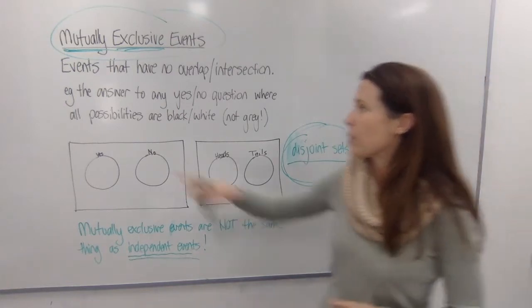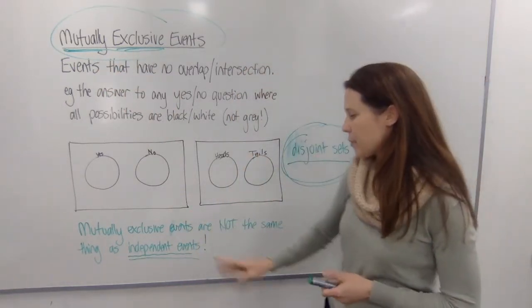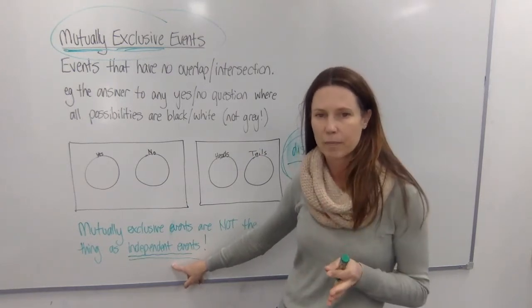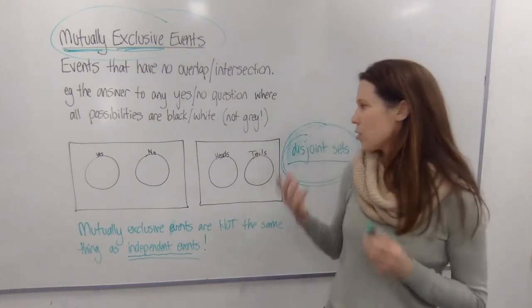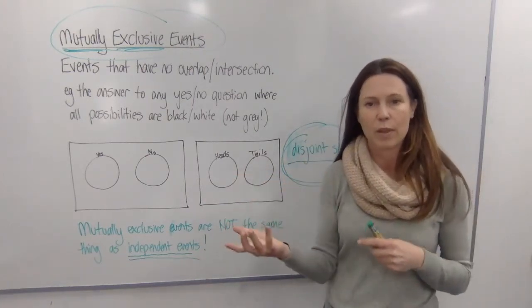Now one of the only things that can get confusing when you see these words in a math question is that people often mistake them as being the same thing as independent events and they're not the same thing. Mutually exclusive events are events where you really can't get both, you have to have one thing or the other.